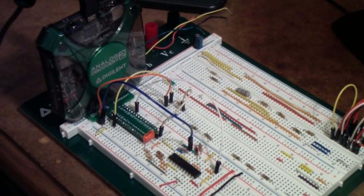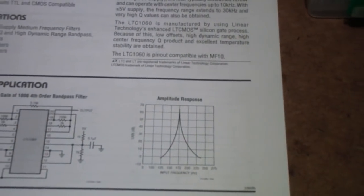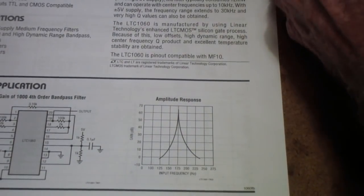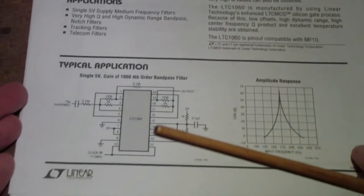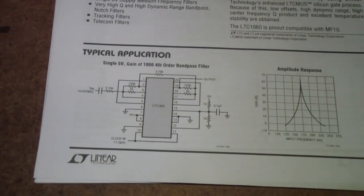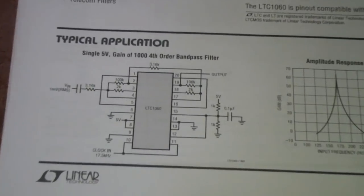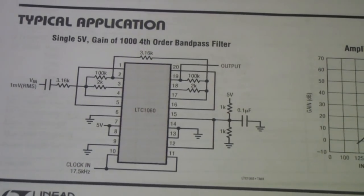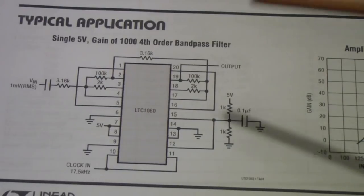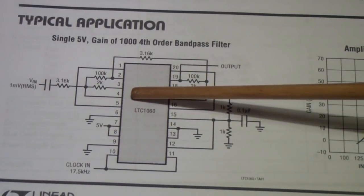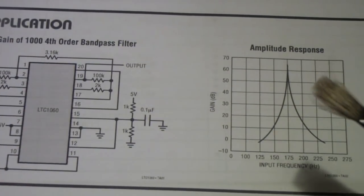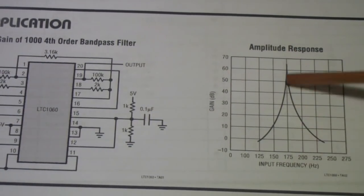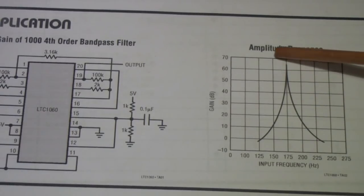The circuit that I'm using is out of the linear technology specification or data sheet. I'll show you a little bit more of what's going on here. This is a gain of 1,000 fourth order bandpass filter and the bandpass is around 175 Hertz.